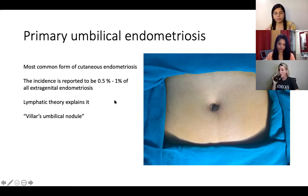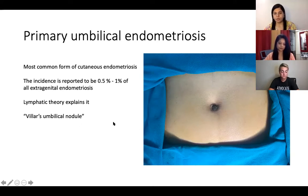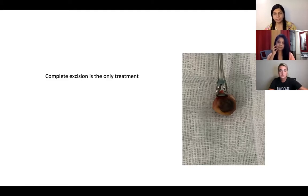Primary umbilical endometriosis can be seen when the umbilicus becomes black and enlarged. This is the most common form of cutaneous endometriosis, with an incidence reported at 0.5 to 1 percent of all extra-genital endometriosis. This is one form of extra-pelvic endometriosis. The cutaneous form is explained by lymphatic spread and is called the Villers umbilical nodule, after who first described it. Complete excision is the answer for umbilical endometriosis, and approximately 81 percent of these cases will have no evidence of pelvic endometriosis.